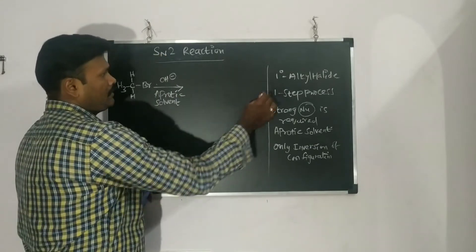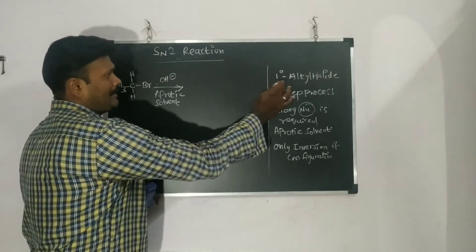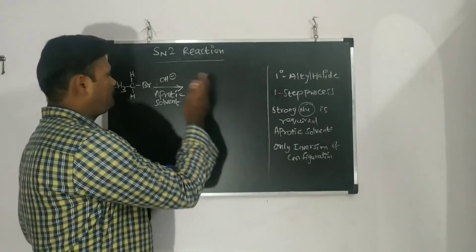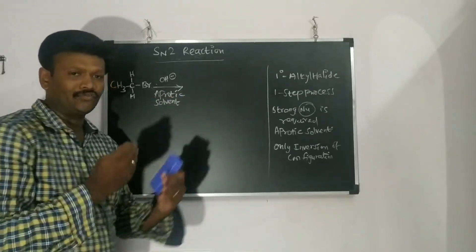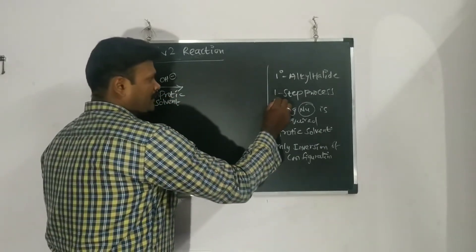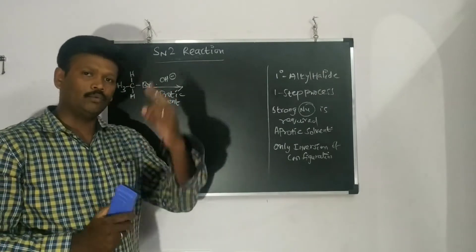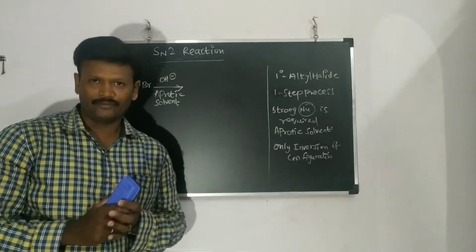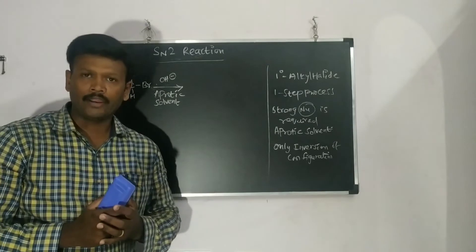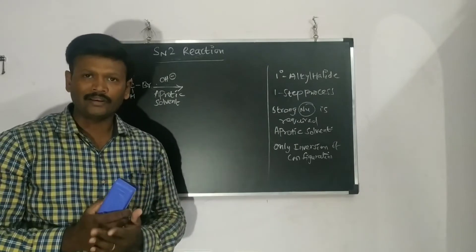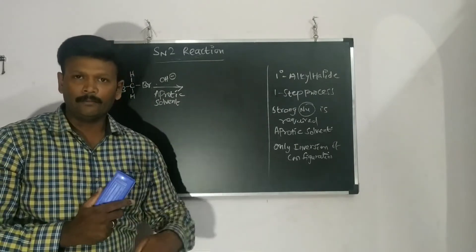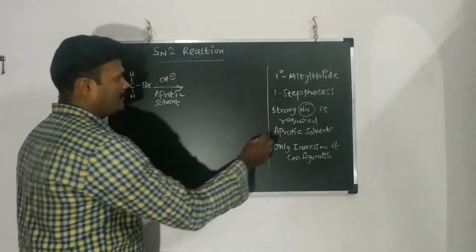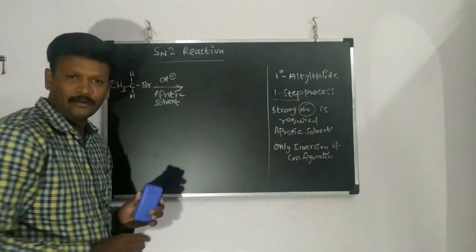In SN2, primary (1°) alkyl halides react very fast compared to secondary (2°) and tertiary (3°) alkyl halides. It is a single-step process. In SN1, we talked about a two-step process where an intermediate carbocation is produced, and then the nucleophile attacks to form the product. But in SN2, it is only a single-step process.